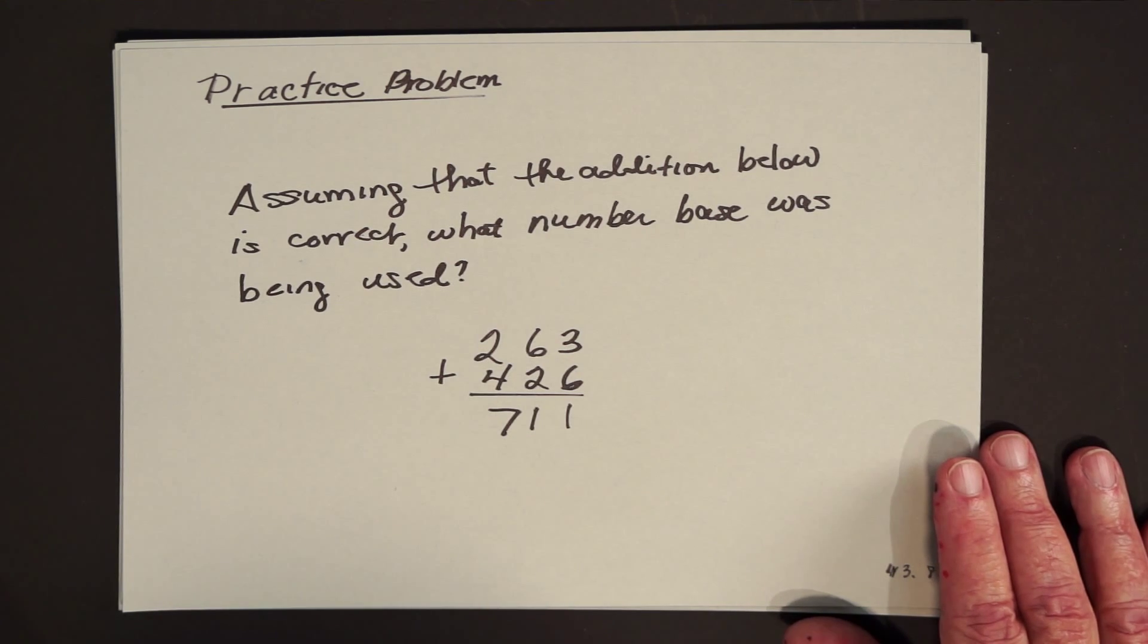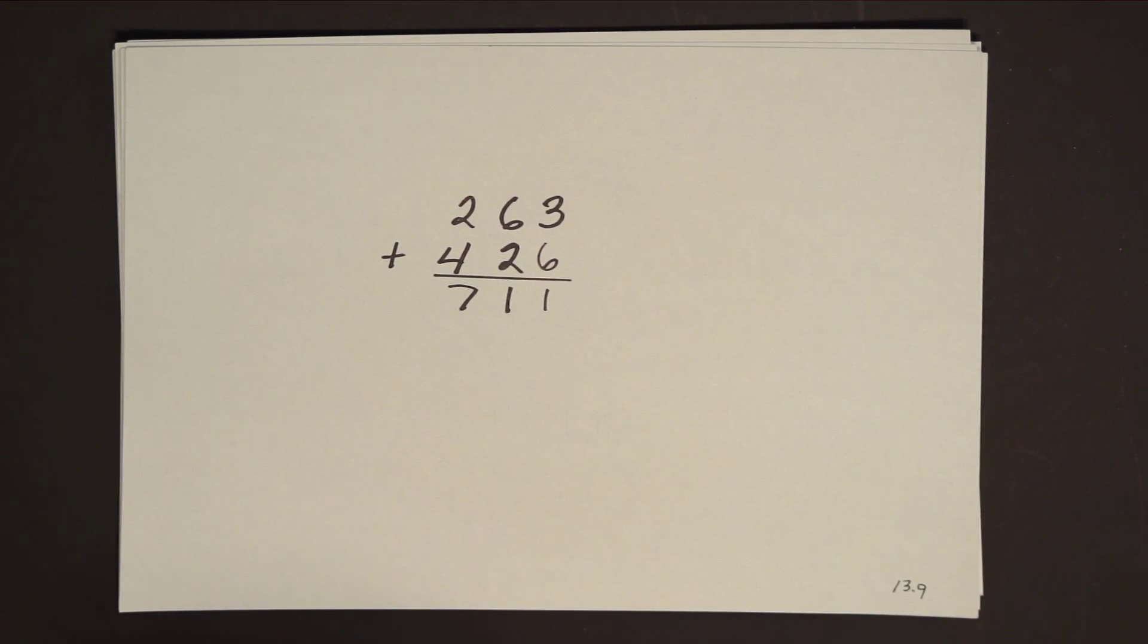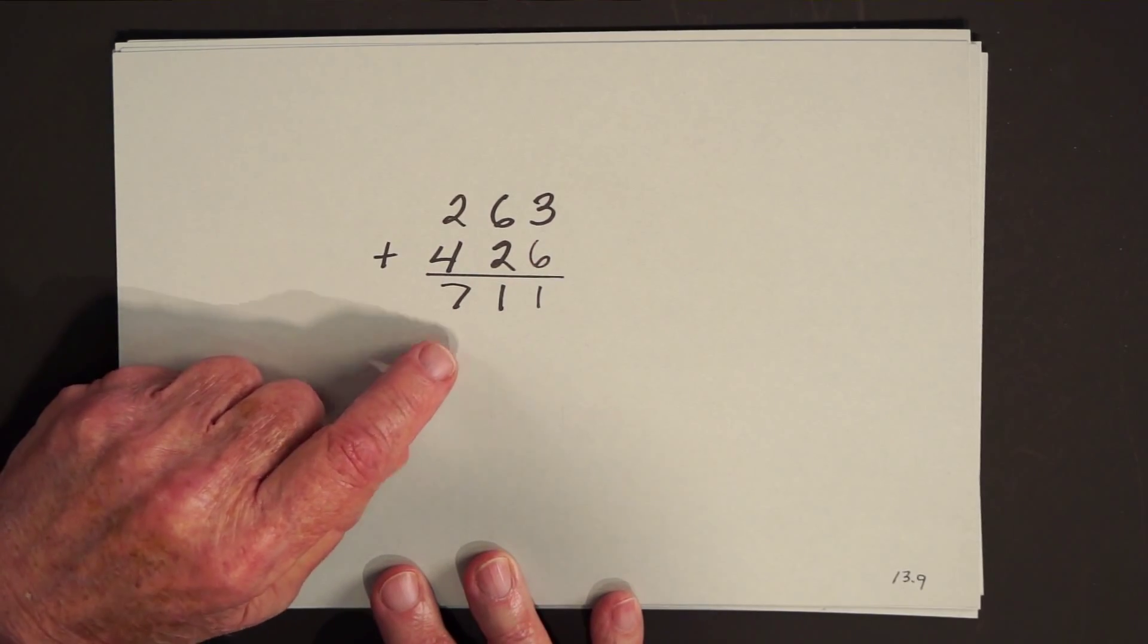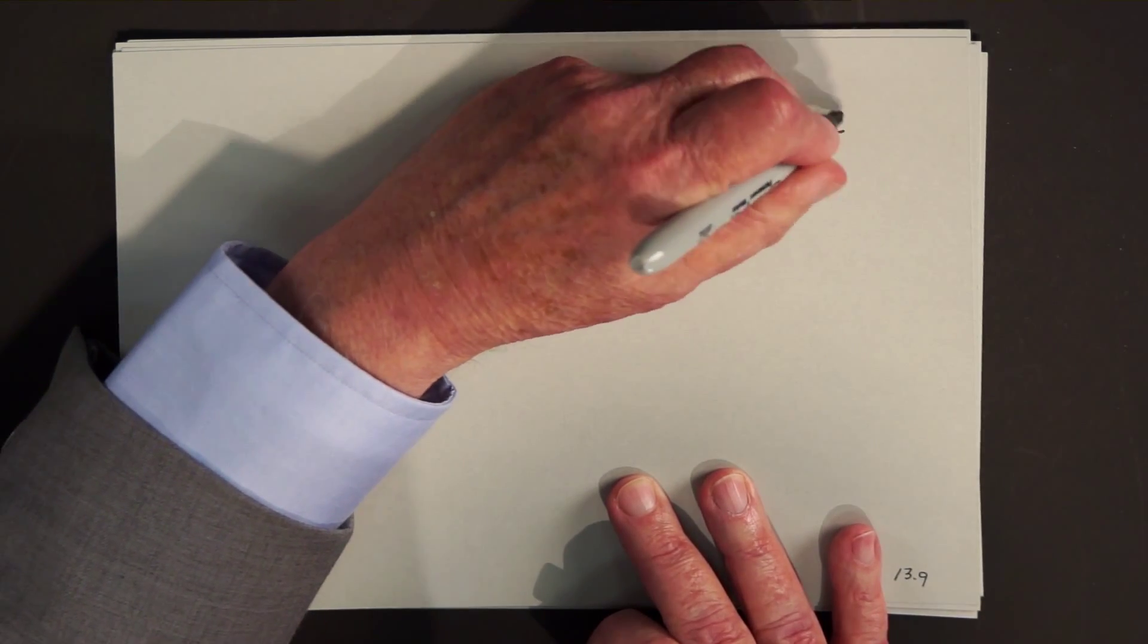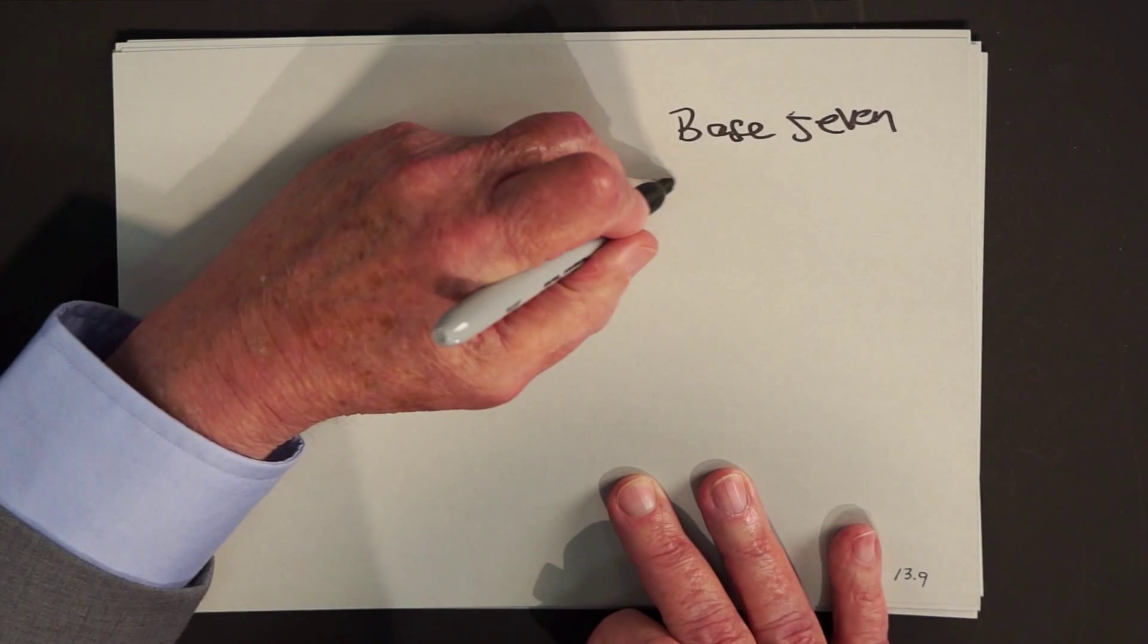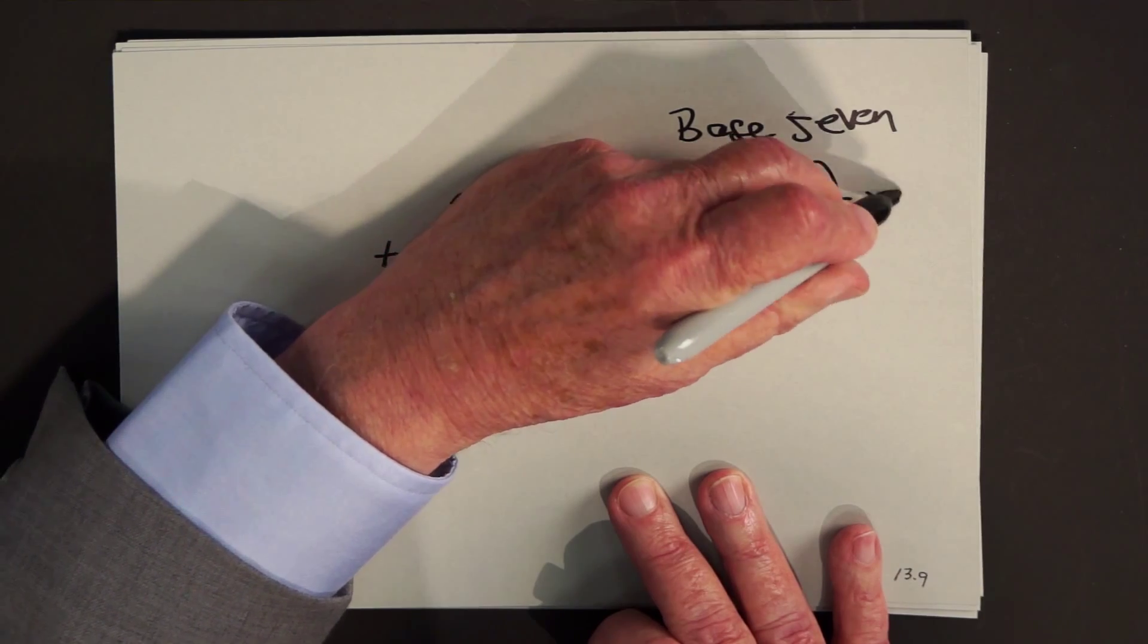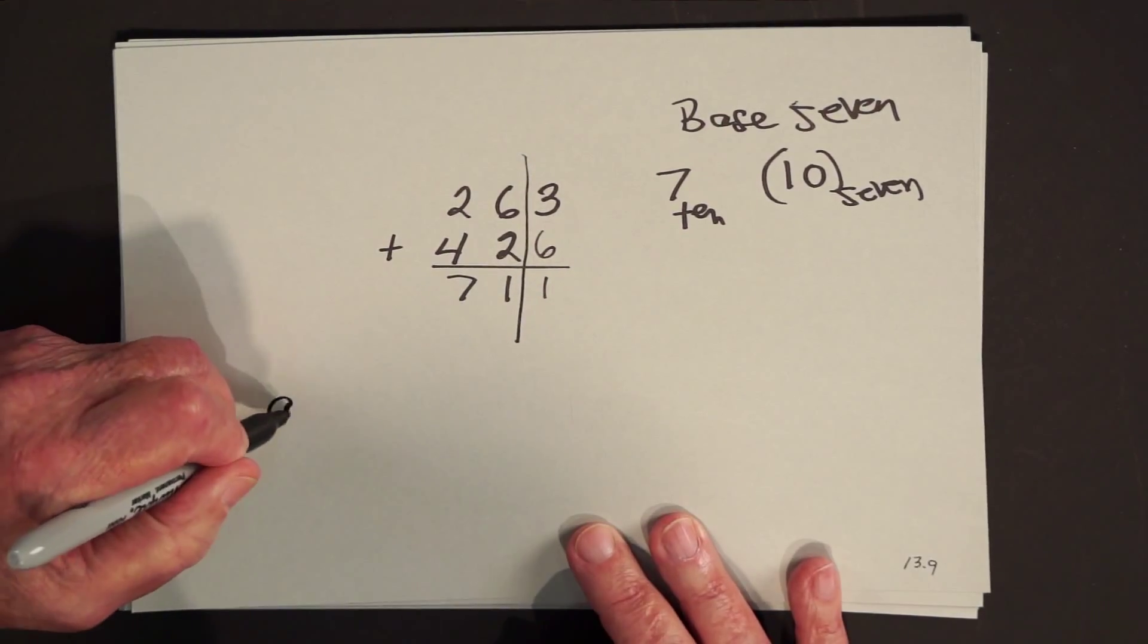And actually, this is one you could almost answer by sight. What clue do I have that the number base has to be greater than 7? What happens in base 7? The number that we write as 7 appears as 10. So the fact that you see a 7 means that you haven't traded in yet. So the base has to be greater than at least 8.